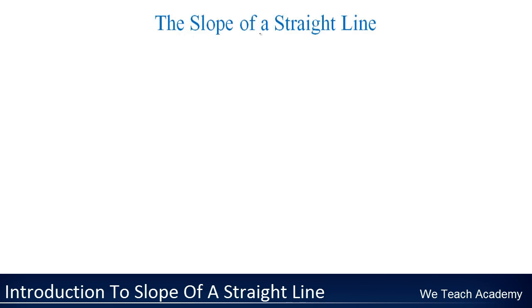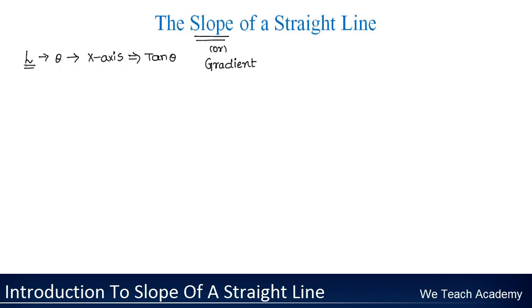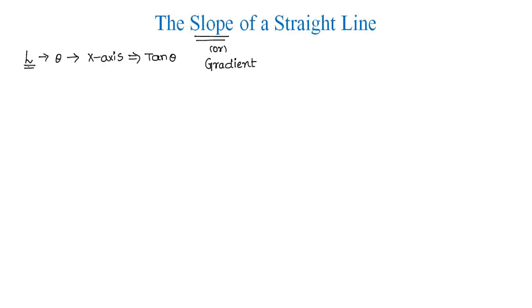Hello friends, this is Mayuri from British Academy and this section is devoted to discuss the slope of a straight line. If a non-vertical straight line L makes an angle theta with the x-axis, then tan theta is called the slope or gradient of the line L. The slope of a non-vertical straight line is usually denoted by the letter M.